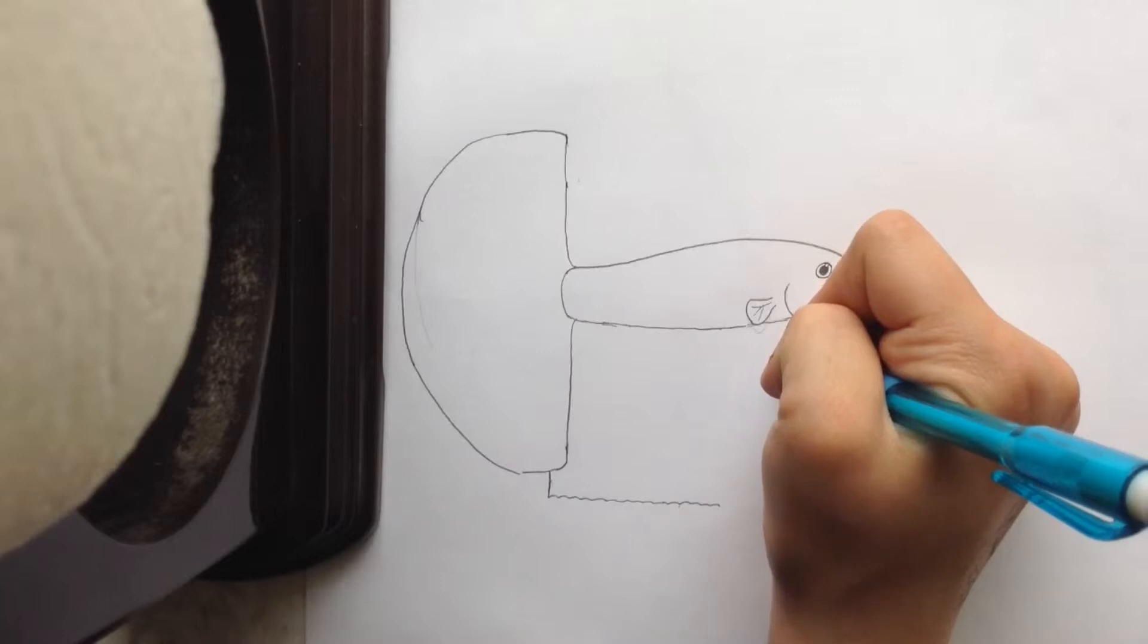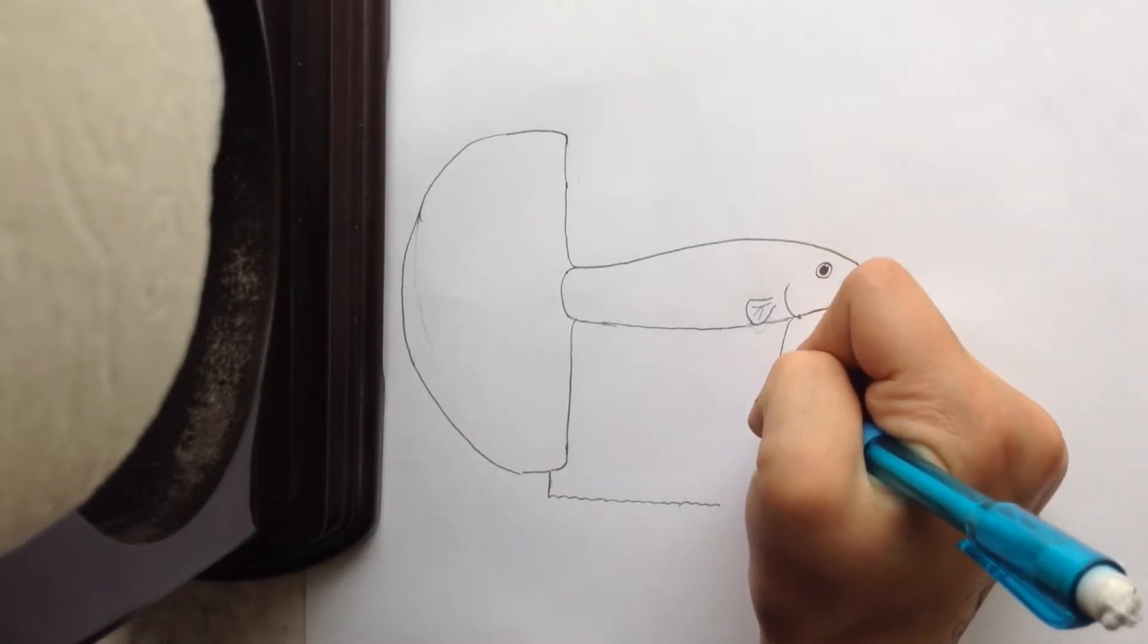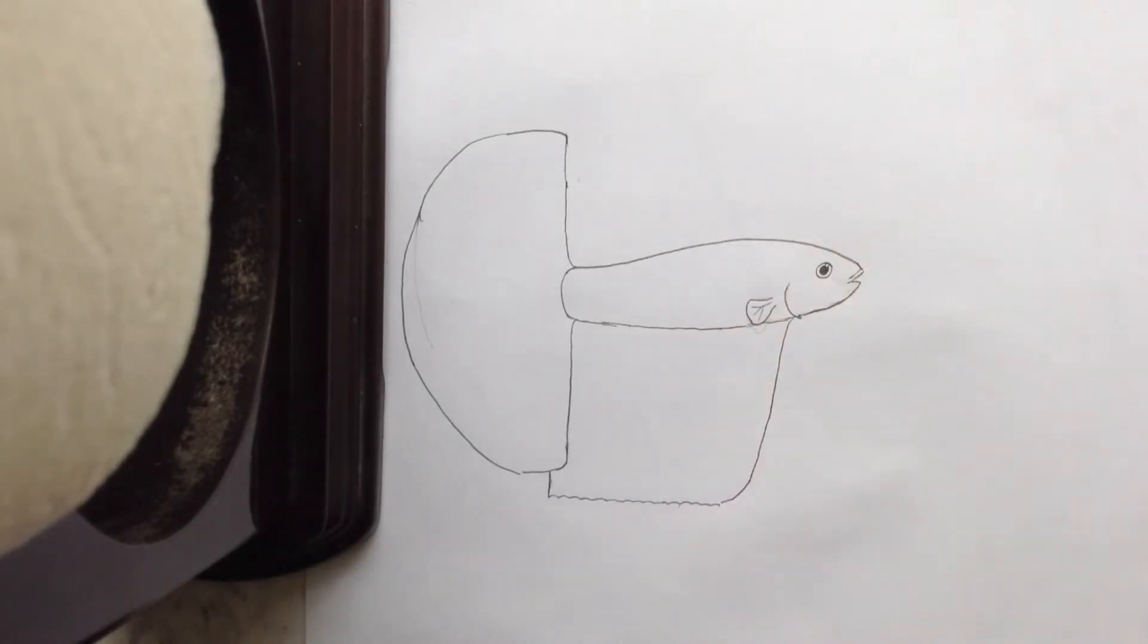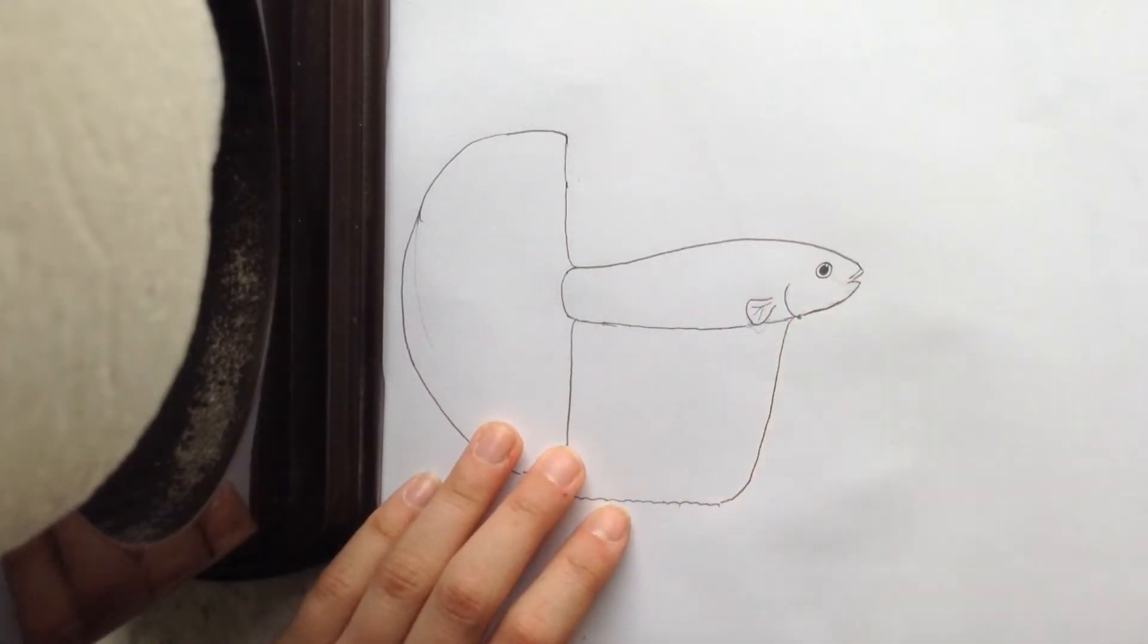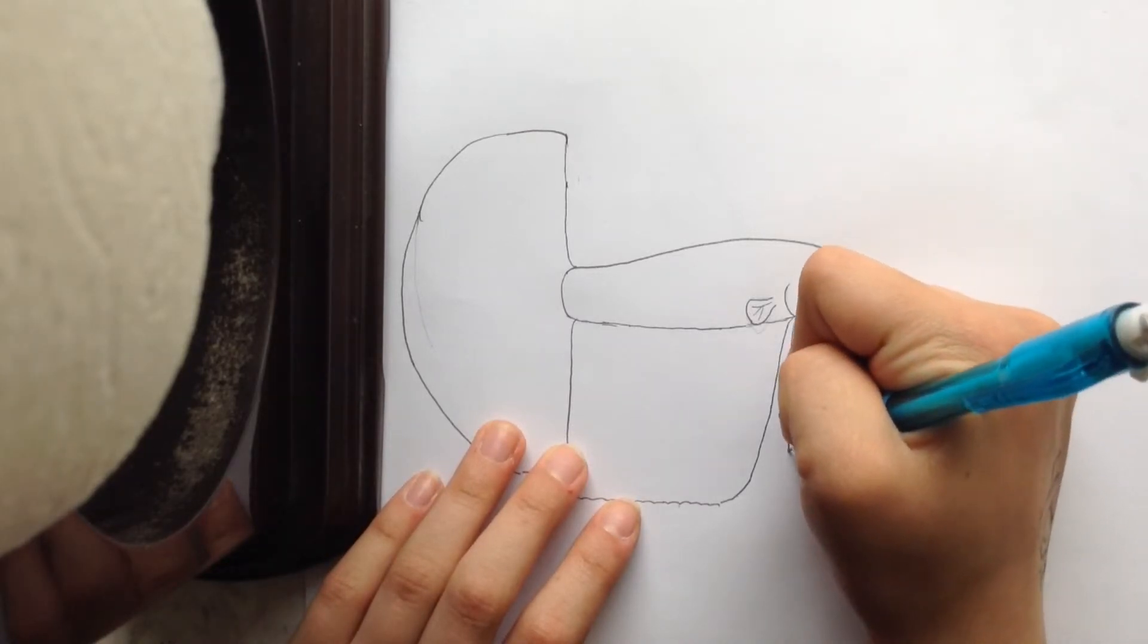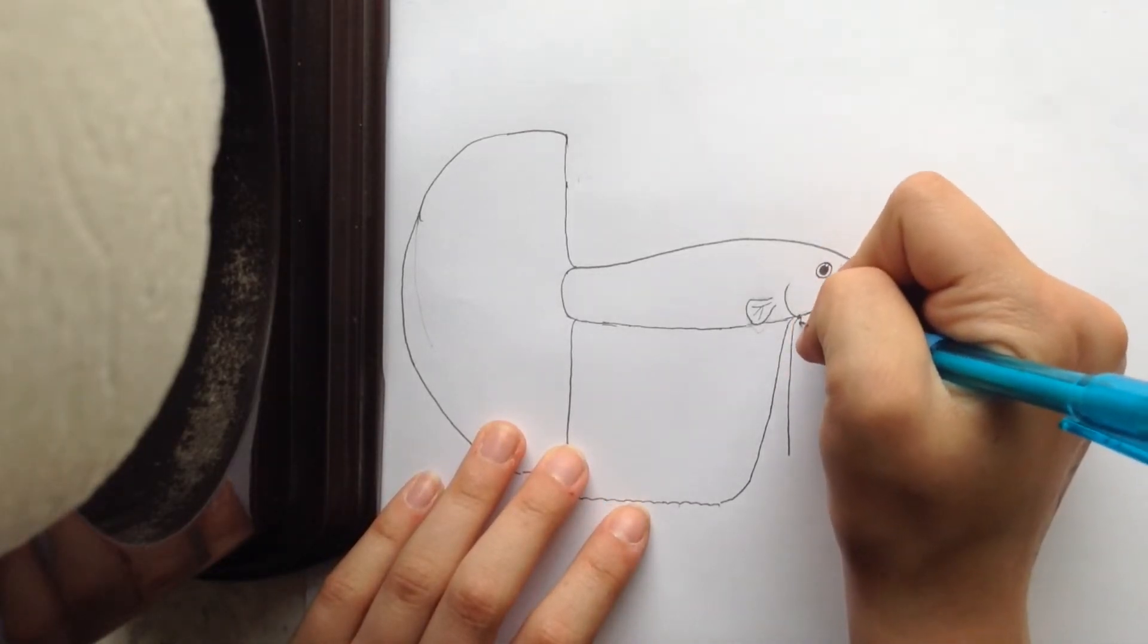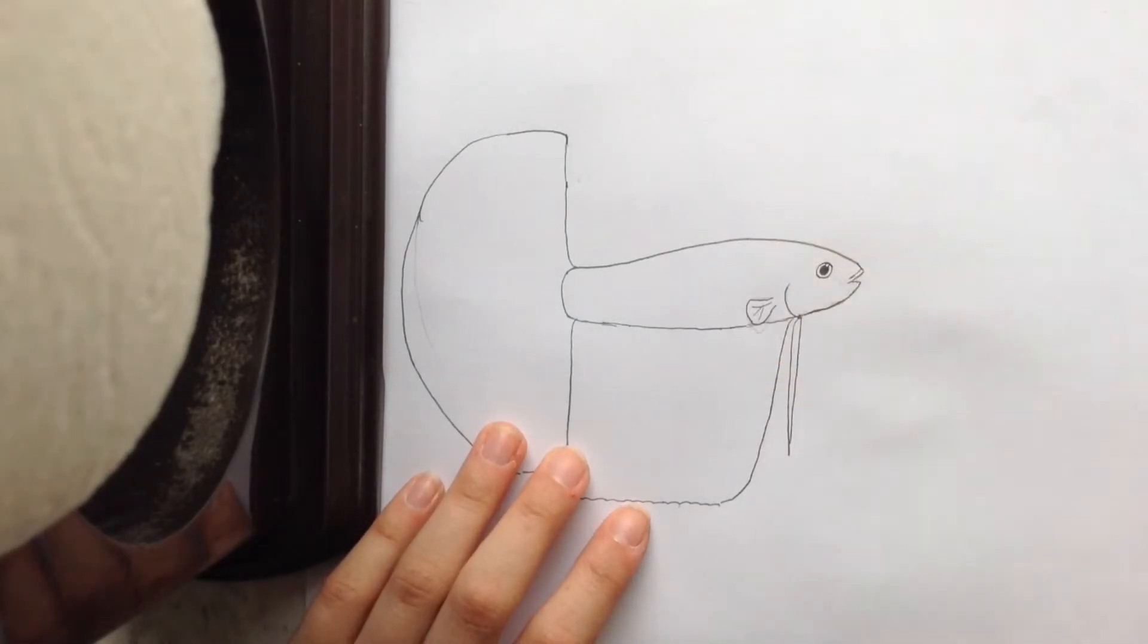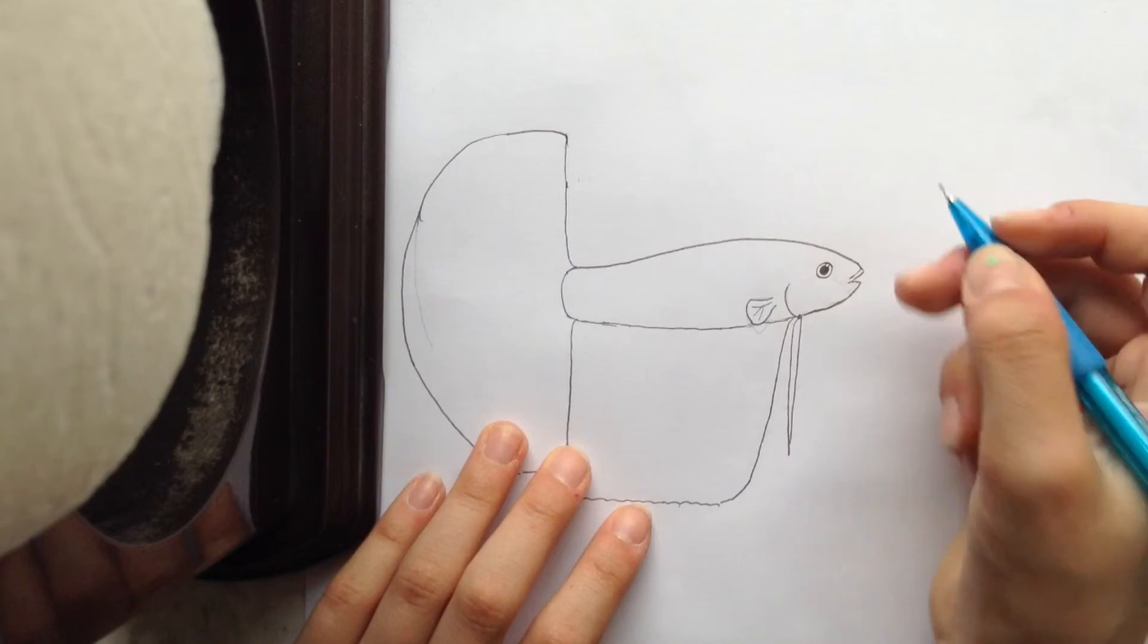And you're going to curve that too. Bring it down so you have the ventral fin. It's not a completely straight line; it goes slightly at a curve.